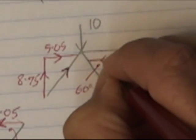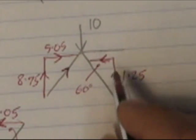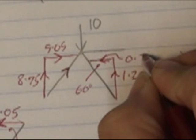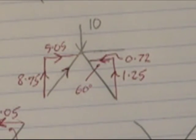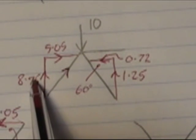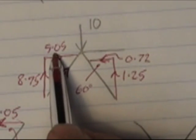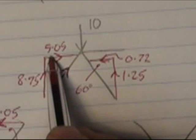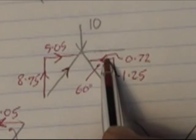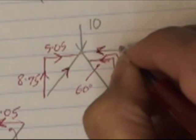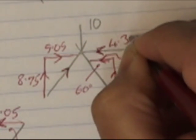This force must be going that way, following along the components. And its value must be 0.72. So, 10 going up, 10 going down. 5 going left. Sorry, 5 going right. 0.7 going left. This one must also be going left. And it must be 4.33.